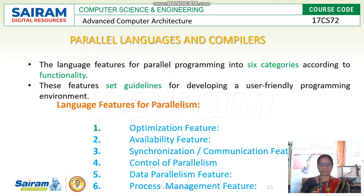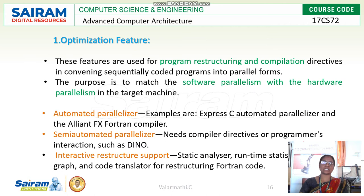Those six features are: optimization feature, availability feature, synchronization or communication features, control of parallelism features, data parallelism feature, and process management features. These language features are divided into 6 categories according to functionality. Let us see the features one by one.